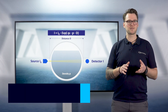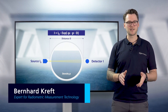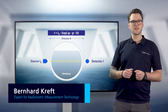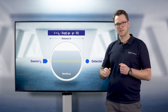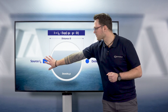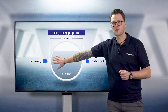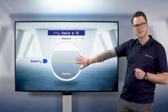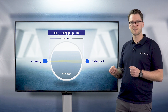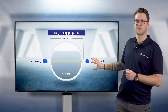Radiometric measurements are based on the sophisticated principle of attenuation. Radiation is generated on one side of the vessel and after being attenuated through the vessel walls and also its contents, the remaining radiation is measured by a detector on the other side.